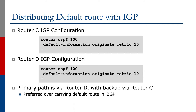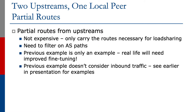We'll have more specific paths to AS-130 and their neighbors, learned through IBGP on router C anyway. Partial routes from upstreams is not expensive — it only carries the routes necessary for load sharing. You need to know how to filter on AS paths, as in the examples we've shown you.